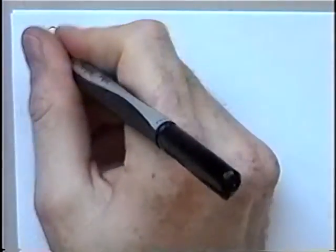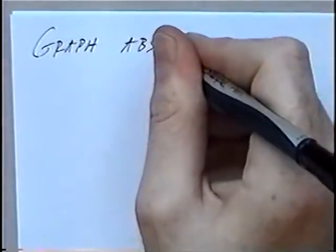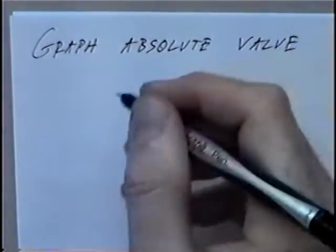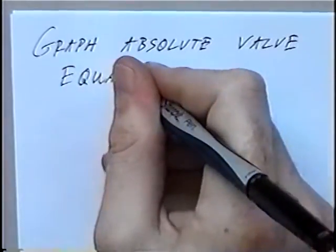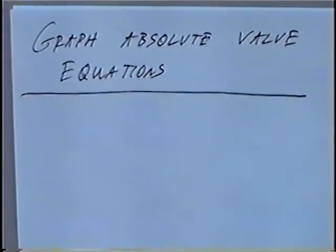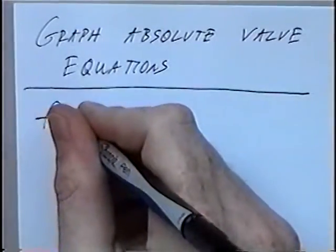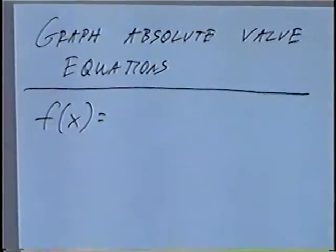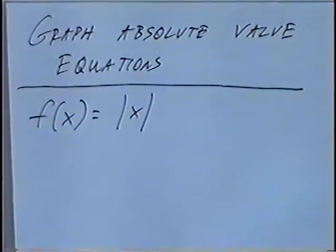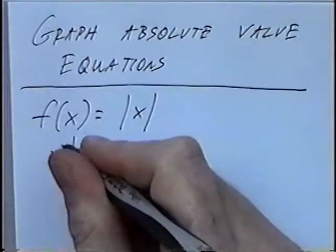The title of the first section today is Graph Absolute Value Equations. In this section, we'll graph Absolute Value Equations on an xy-axis. The first equation is f(x) equals the Absolute Value of x. To graph Absolute Values the first time, we'll make a t-table with t-values.